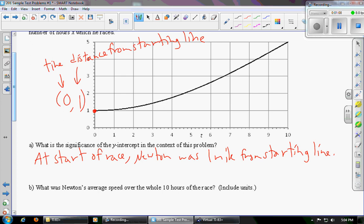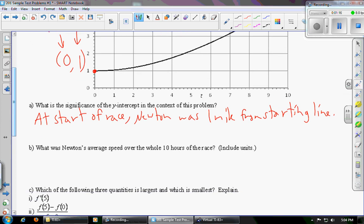We'll move on to B. What was Newton's average speed over the whole 10 hours of the race? Include units. Okay, so we're just going to use our little formula here. We know that the average velocity, average speed, is change in distance over change in time. So that means we're subtracting some stuff up here and dividing by subtracting some stuff down below. So over the whole 10 hours, that means we want to know between 0 and 10, and then the same numbers go downstairs without the function.